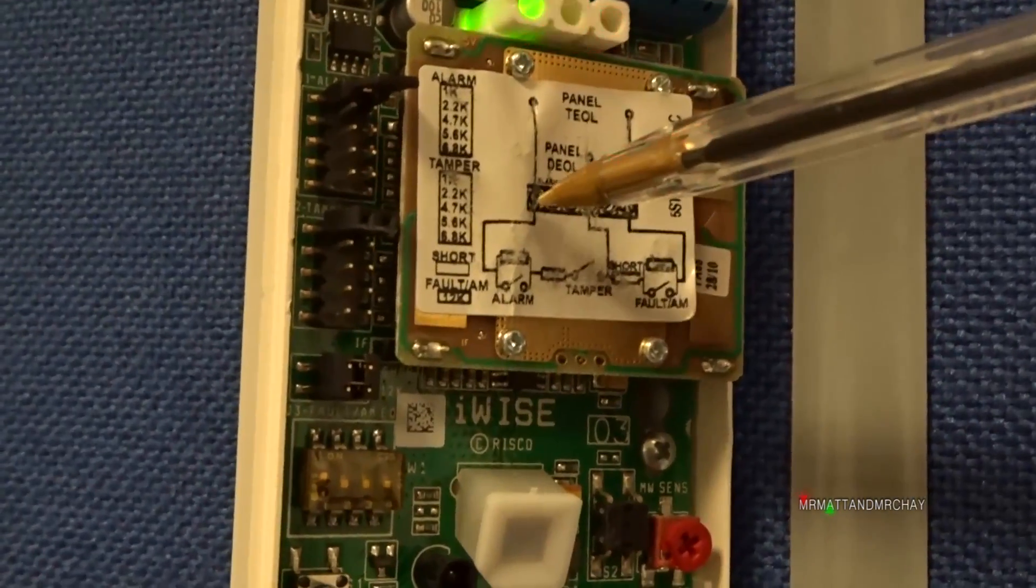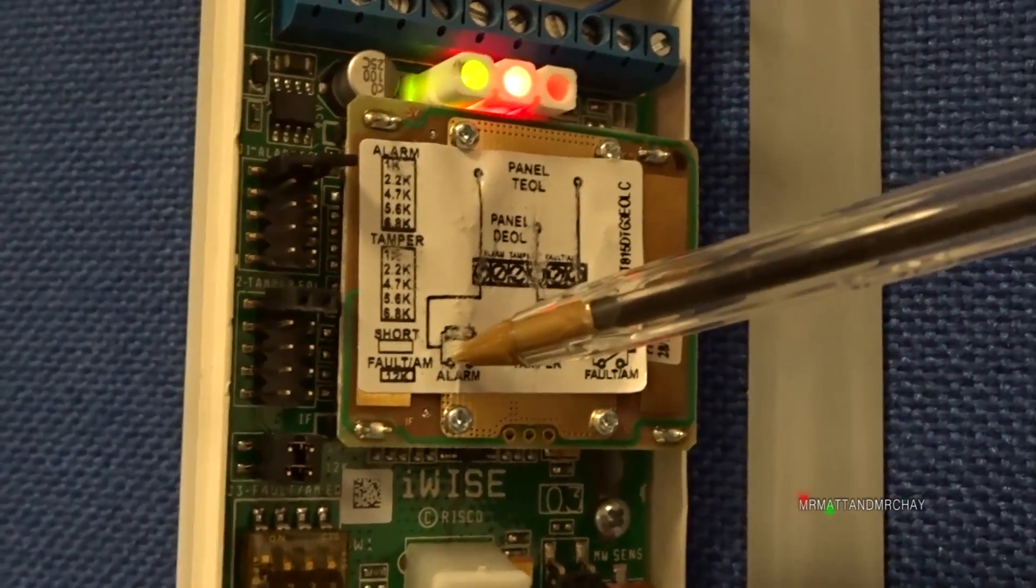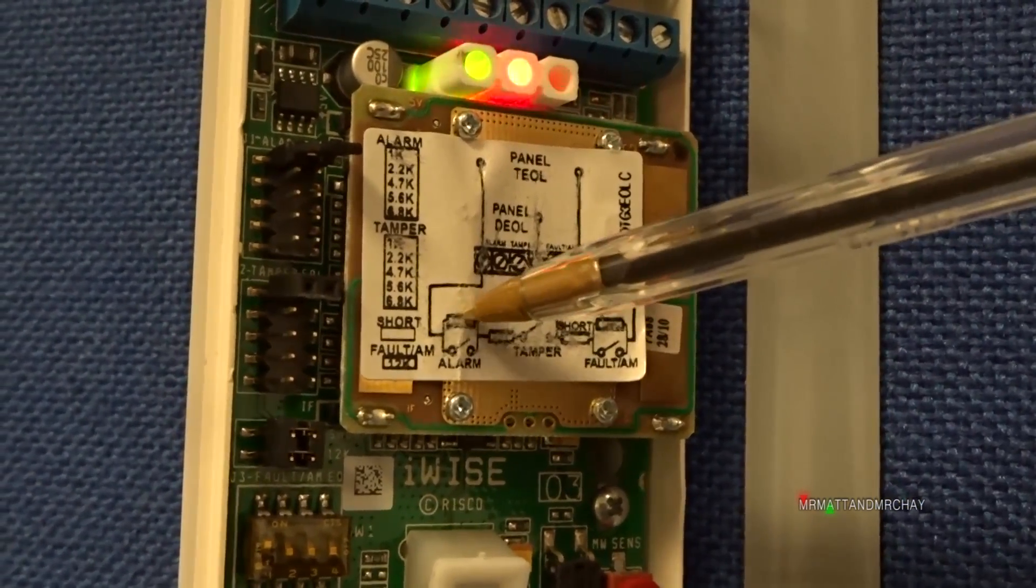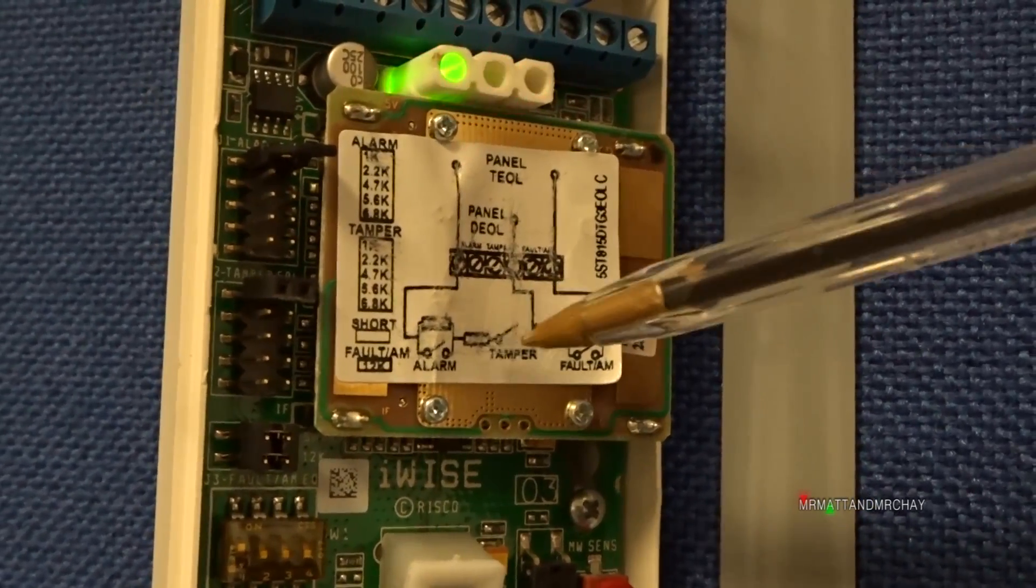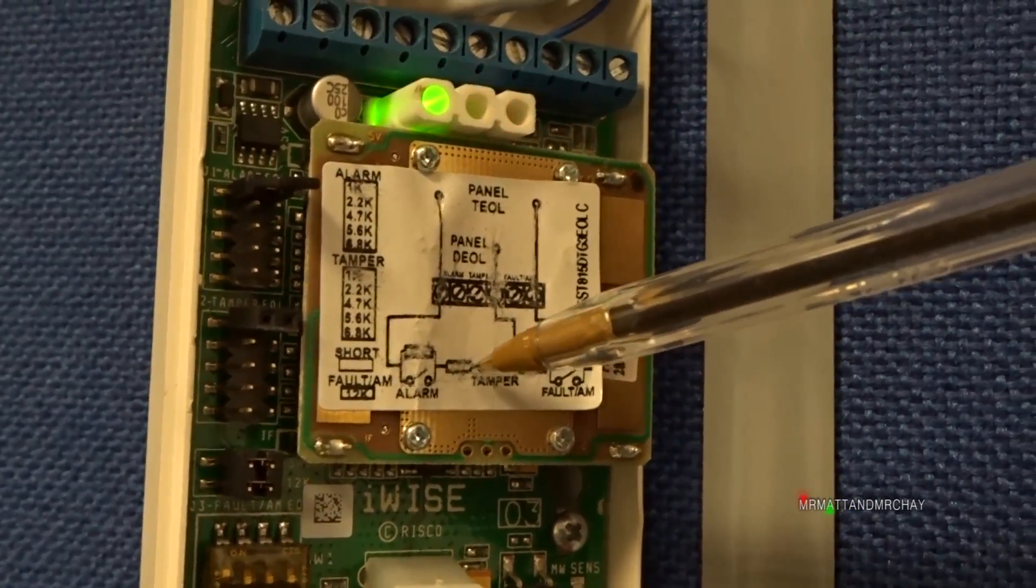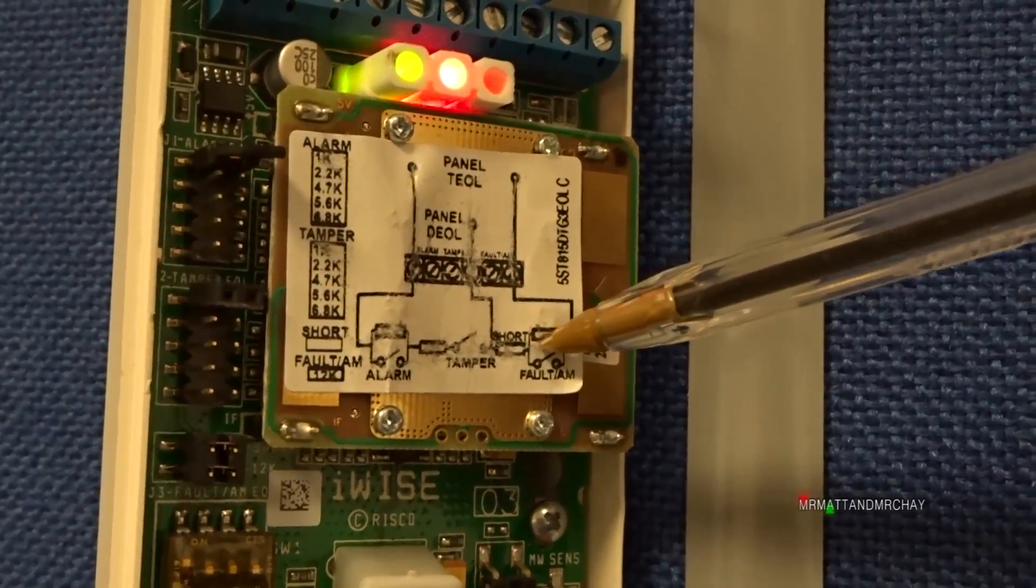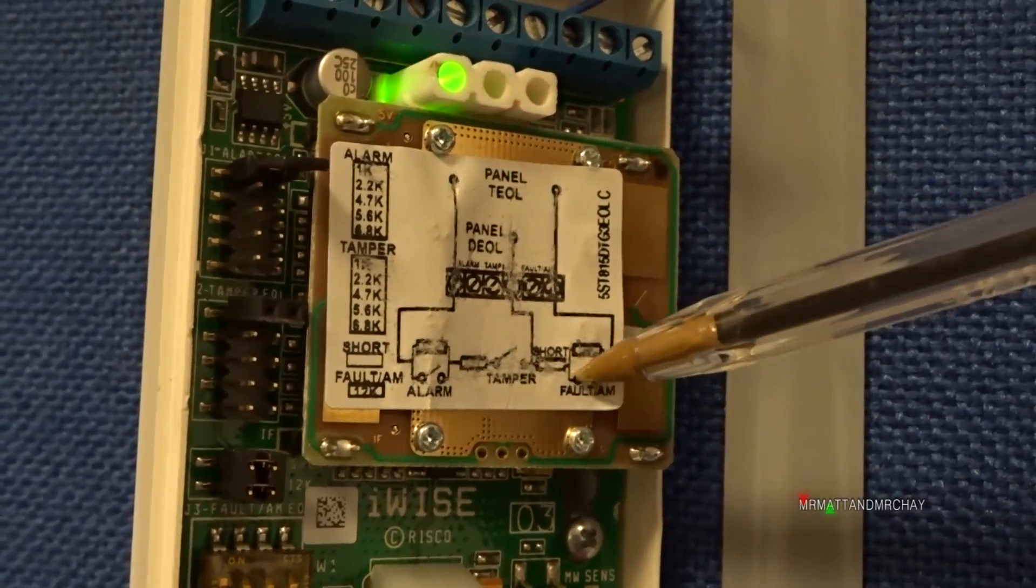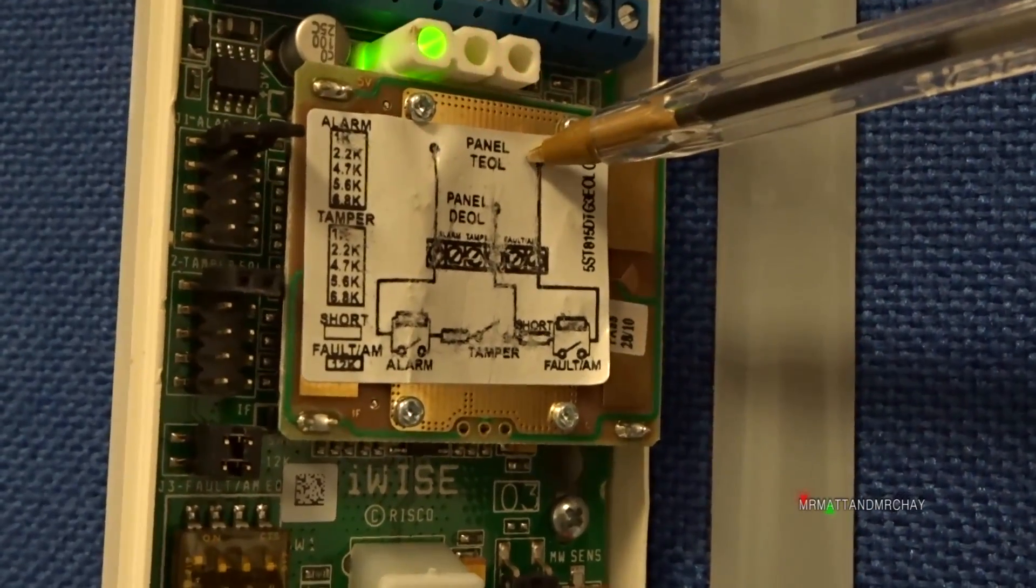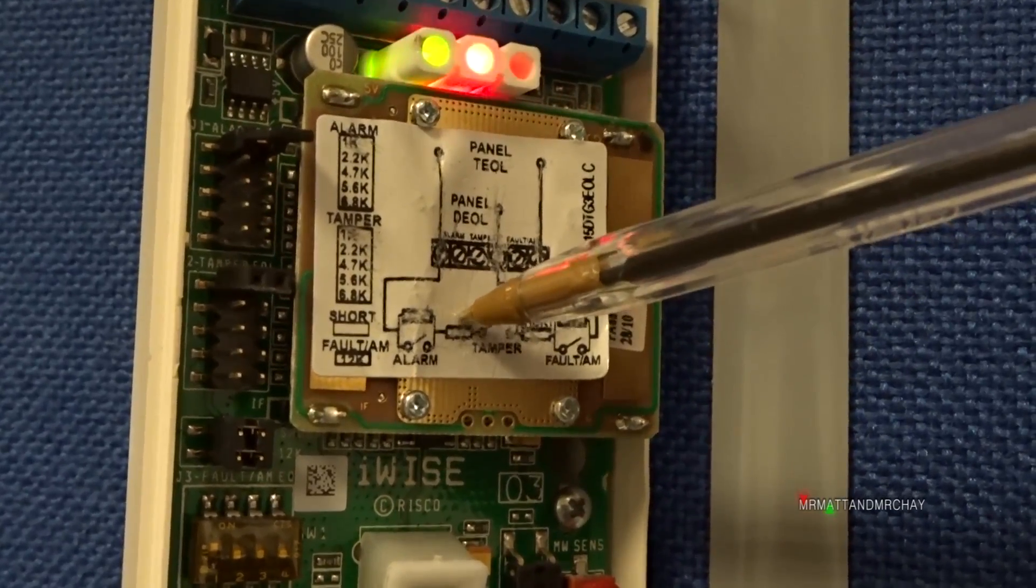So yellow wire comes in, comes down, goes through the circuit board. If the detector is not detecting motion, then this resistor which is 1k is bypassed, so it's not read. It's forced through this one. Then it goes across the tamper switch if the lid is on. Goes down here. If the detector is not masked, then this resistor is bypassed. Back to the control panel. So not detecting motion, the only resistor that's read is that one - 1k.